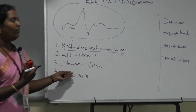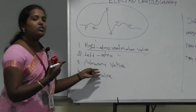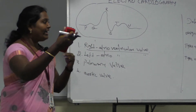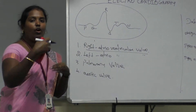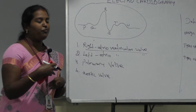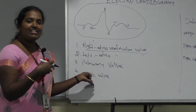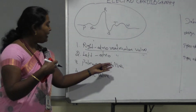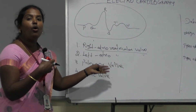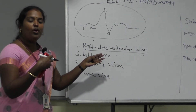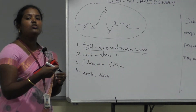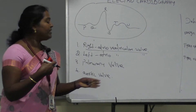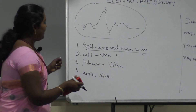The third valve is the pulmonary valve, which is located at the exit of the right ventricle and does not allow backward flow from the right ventricle. The last one is the aortic valve, which is located between the left ventricle and the aorta, and it also prevents backward flow from the left ventricle.